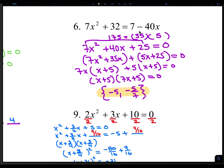To solve number 6 by factoring, we'll need to subtract 7 and also add 40x to set it equal to 0. The result would be 7x squared plus 40x plus 25. Multiplying 7 times 25 is 175. The two numbers would be 35 and 5, because they multiply to 175 and add to 40. So in the first group you'll have 7x squared plus 35x, and the second group will be 5x plus 25. The greatest common factor in the first group is 7x, leaving you with x plus 5. Greatest common factor in the second group is 5, leaving you with x plus 5. So the complete factoring would be x plus 5 times 7x plus 5. Setting each equal to 0: solving 7x plus 5 equals 0, you subtract 5 and divide by 7 to get negative 5 sevenths. And if x plus 5 is 0, then x is negative 5.